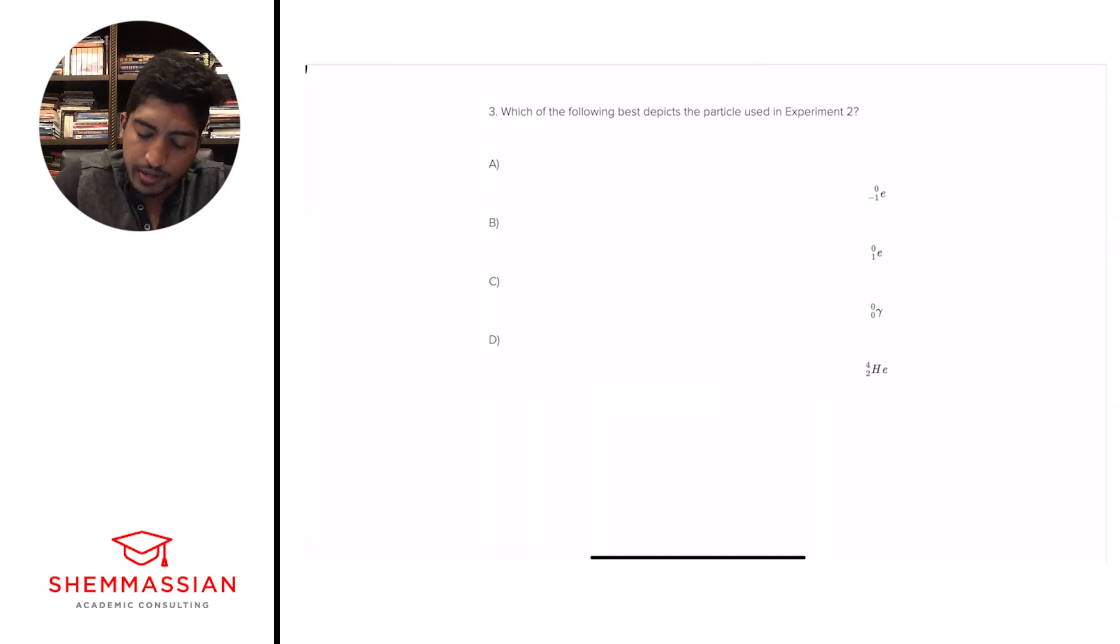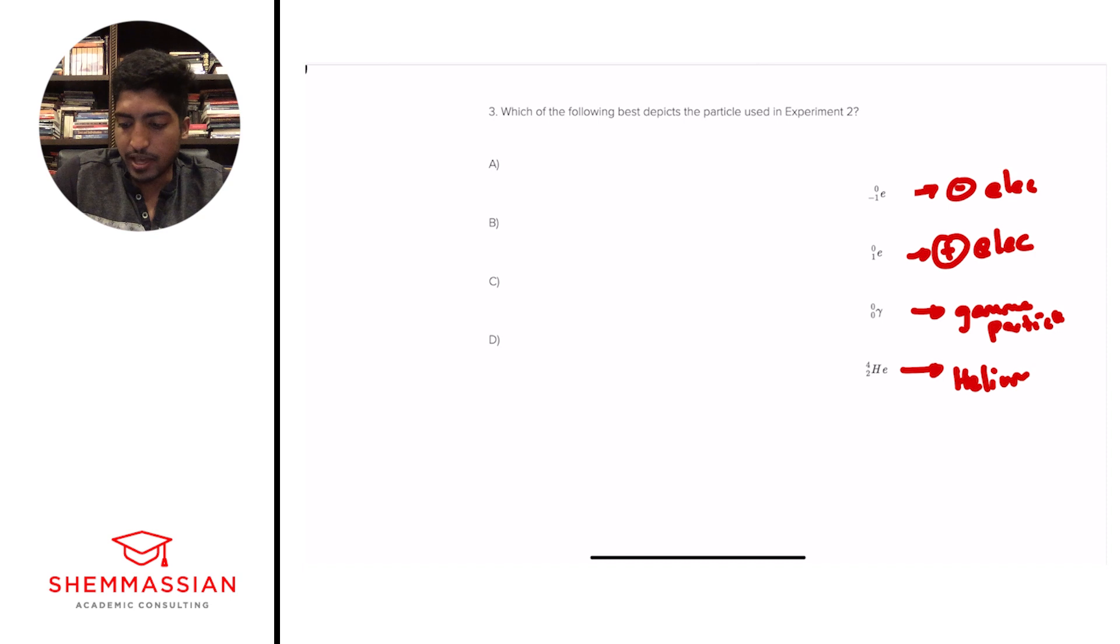Question number three. Which of the following best depicts the particle used in the experiment two? Is it A, an electron with a negative charge? B, an electron with a positive charge? C, a gamma with a neutral charge? Or D, a helium with just a normal helium atom? Alright. So, an important thing that I did with the answer choices is I recognized what each of these are. This is a negatively charged electron. This is a positively charged electron. This is a gamma particle. And this is a helium atom. A normal helium atom.